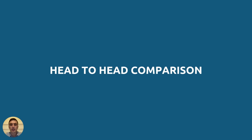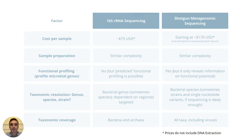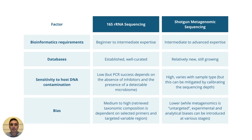As explained, shotgun metagenomic sequencing provides more information than 16S sequencing. However, shotgun metagenomic sequencing has some limitations. This table outlines the relative merits of both types of microbiome sequencing and can be found in the linked blog on the Microbiome Insights website. Let's go through some of these factors to consider in detail.